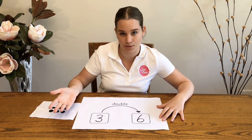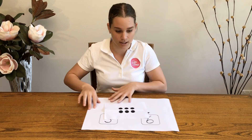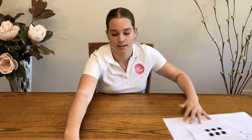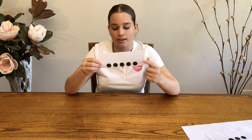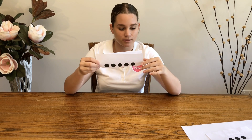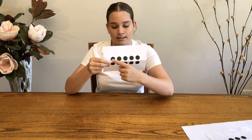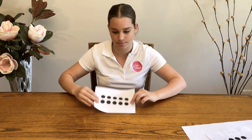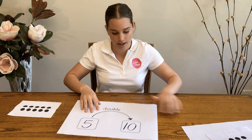Let's look at this on a diagram. We have three, double three is six. Double three is the same as two times three. Now let's look at this one: I have one row of five. We know one row of five is five.